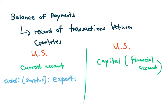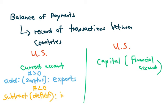On the other hand, what subtracts from a country's current account and moves it towards a deficit — a number less than zero? Imports are what subtract from the current account because money is leaving the country. Anytime money is leaving a country, it subtracts from the proper account — either current or capital, depending on the transaction. If it's deals with goods and services, that's the current account. Exports add to it; imports subtract from it.